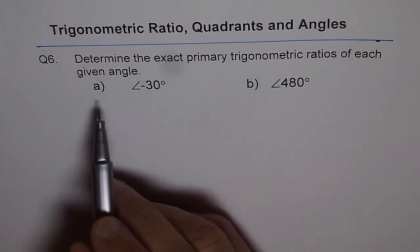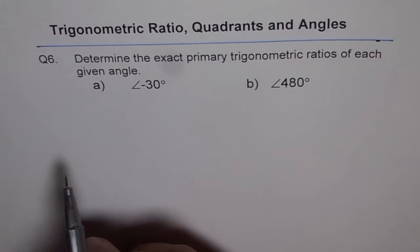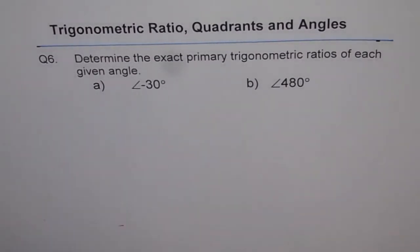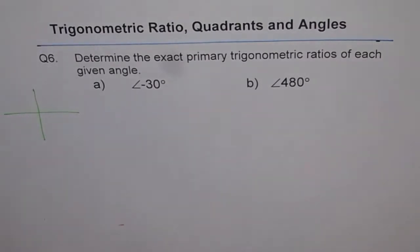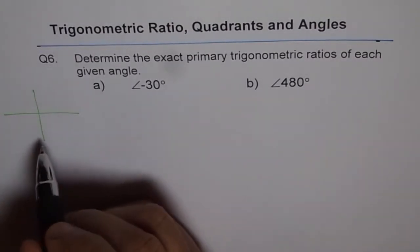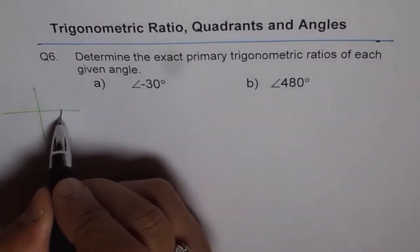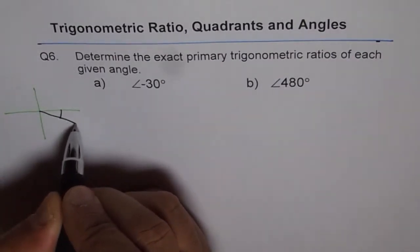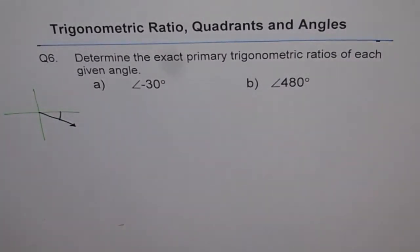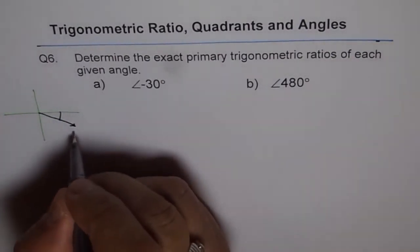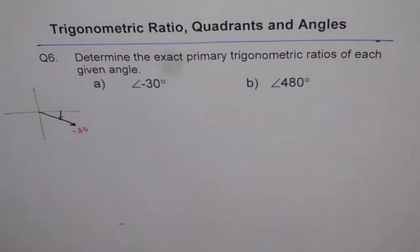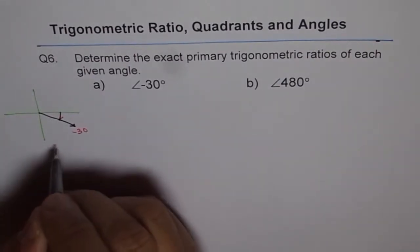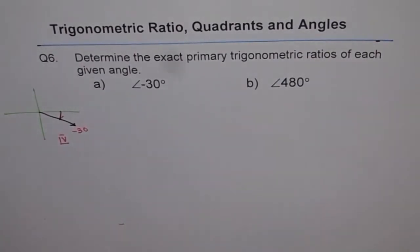Part A is for minus 30 degrees. Let's see what minus 30 degrees is. Whenever we have minus, it means we are moving clockwise. So minus 30 degrees will be this angle. When you go in this direction, you land up in quadrant 4.